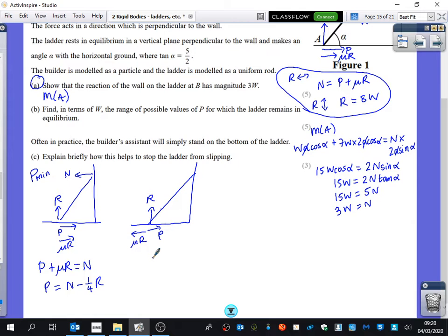Whereas this one, we can see that you get P equals N plus mu R. So P is equal to N plus a quarter R. This is just because the direction of the friction has flipped. And we've just worked out that N is 3W. Pardon?